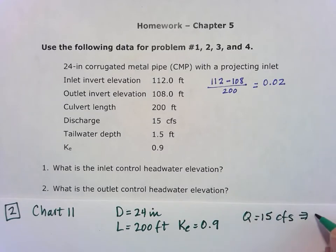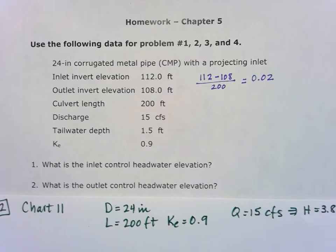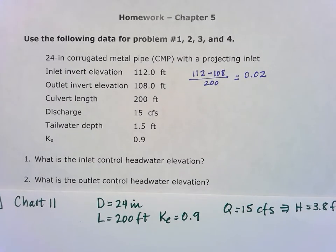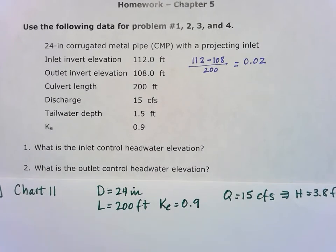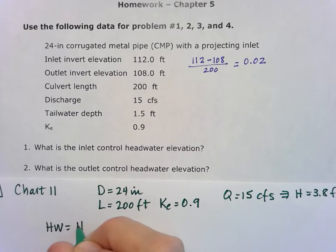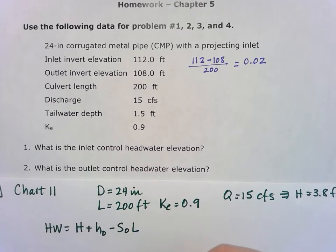So for that Q of 15 cubic feet per second, that does give us a head value of 3.8 feet. But we're not done yet, because in order to work this out, we have to find that headwater. So we'll find the headwater first and then the elevation. The headwater is equal to that head plus the tailwater minus the slope times the length.